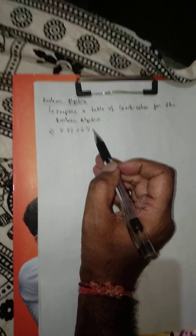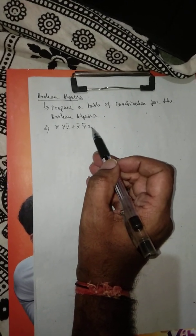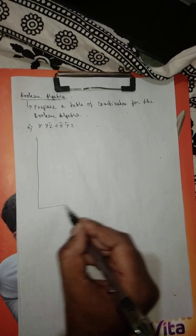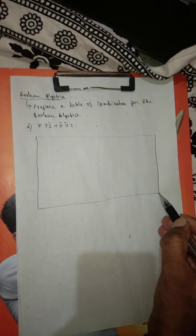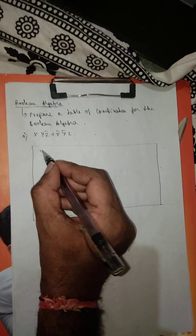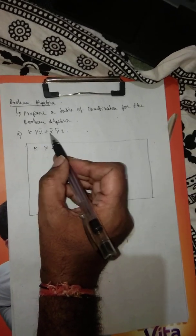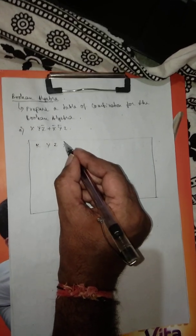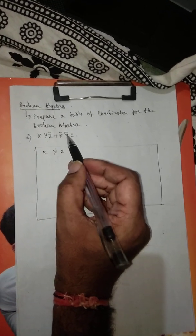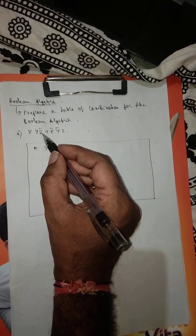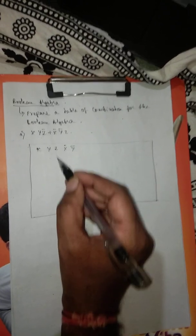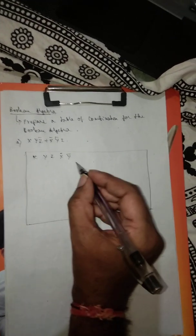When we carefully look into this particular Boolean expression, we have three variables. So I will prepare a table which consists of three variables: x, y, z. We need to carefully observe this — if there is x and also x bar, then I need to include x bar first. Similarly y bar is there, and z bar is there — so this is the basic combination you have to write in order to arrive at z bar.